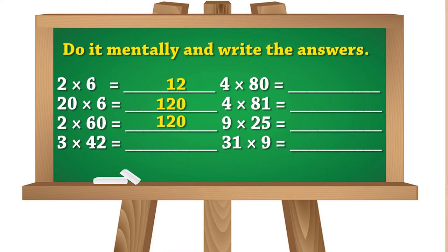The next problem is 3×42. My guess is to round to the nearest ten: 40×3 is 120, then I need to add 2×3 extra. So my guess is it is more than 120. If I calculate it, it becomes 126. My guess work is very close to the exact answer.